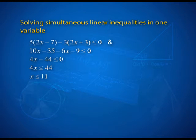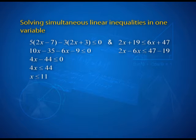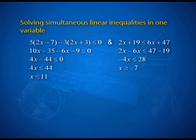Solving the second inequality, we get 2x − 6x ≤ 47 − 19, or −4x ≤ 28, or x ≥ −7. Since we are solving these two simultaneous linear inequalities in one variable, we have to find the common solution for both inequalities.